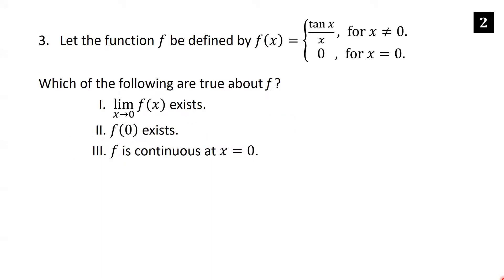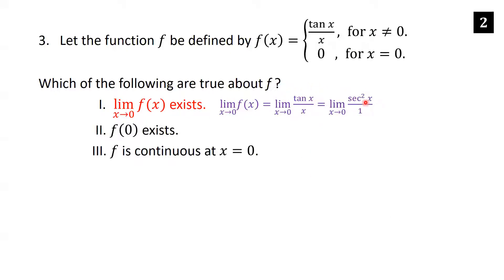Let f be defined as tan(x)/x for x ≠ 0, and 0 for x = 0. For part one, does the limit as x→0 of f(x) exist? Since we're approaching but not equal to 0, we use tan(x)/x. Applying L'Hôpital's rule: the derivative of tan x is sec²x and the derivative of x is 1. Plugging in 0: sec²(0) = (1/cos(0))² = 1² = 1. So the limit exists and equals 1.